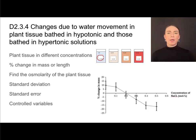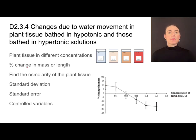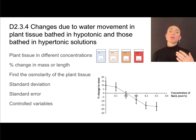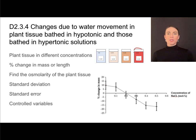If you don't know the concentration of solutes in a cell and want to find out, that's called the osmolarity — the total solute concentration in a cell. To find the osmolarity of something like a carrot, you can place the plant tissue in solutions of different solute concentrations and measure the percent change in mass. If the plant tissue is gaining mass, it must be in a hypotonic solution.